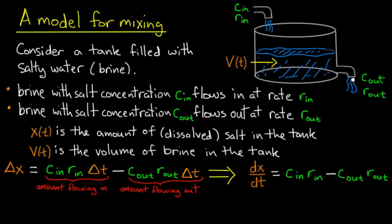Same goes for out, the rate out. So the rate of salt flowing out is C_out times r_out. We know the rate at which salt flows in, and we know the rate at which salt flows out. So how do we figure out the total amount of salt that flowed in, and the total amount that flowed out over the time interval Δt?